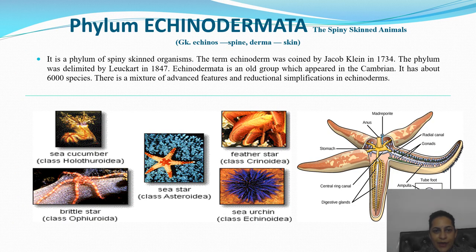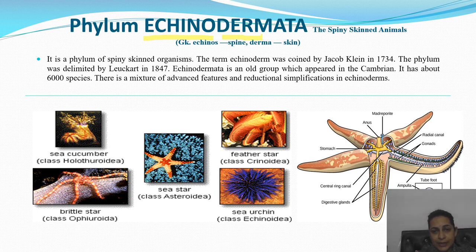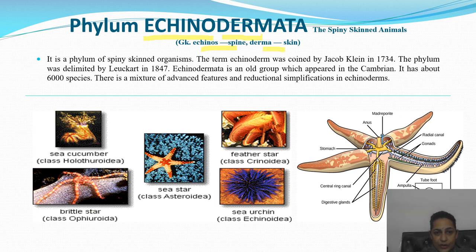The next phylum is Echinodermata. Echinos means spiny and derma means skin — so these are the spiny-skinned animals. It is a phylum of spiny-skinned organisms. Just as we have dermatologists for skin, derm means skin. The term echinoderm was coined by Jacob Klein.